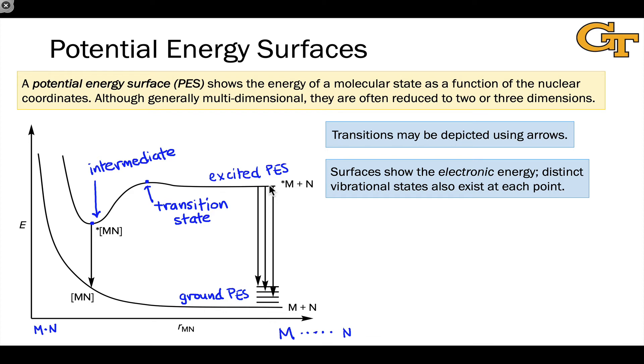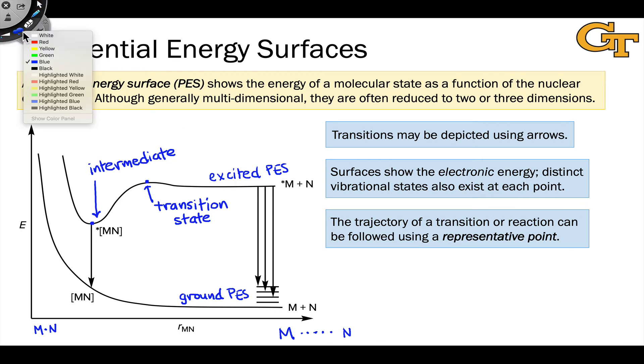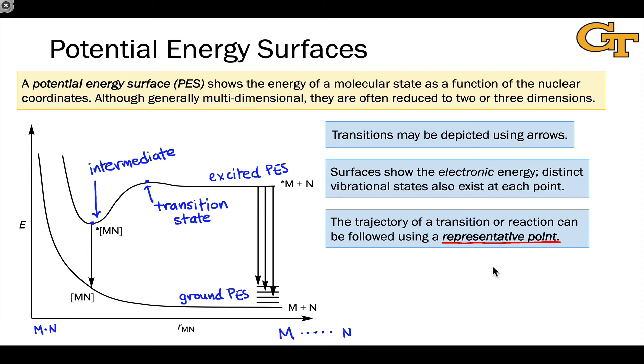If we want to think about how a molecule proceeds through a photophysical transition or a photochemical reaction, what we want to do is follow it as it moves along one or more potential energy surfaces. It's going to be helpful to formalize this and give a name to the point that we follow on potential energy surfaces to chart the trajectory of a molecule. And we're going to call it the representative point.